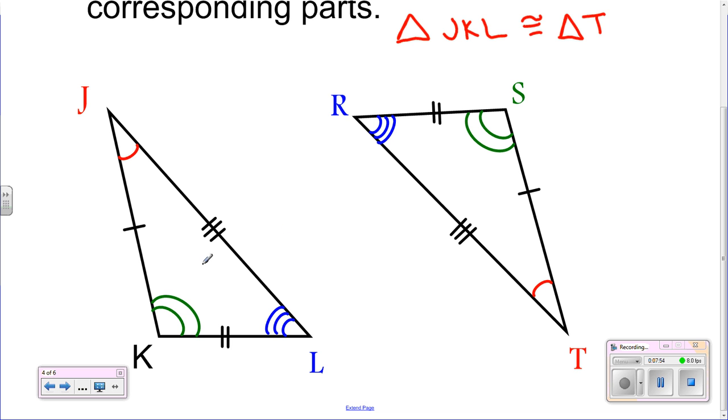J is the same as T, so it's congruent to triangle T. K, you can tell by the two loops, is congruent to S, which means lastly L is congruent to R. So your congruent statement is triangle JKL is congruent to triangle TSR.